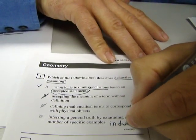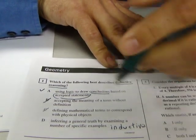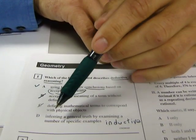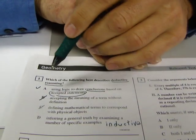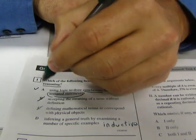Inferring a general truth, in other words, using a series of observations to come up with a general idea. That's inductive. But we're looking for deductive. So I'm going to go with A. Using logic to draw conclusions based on accepted statements. Do you agree, Angel? Yep.